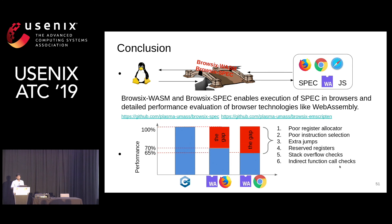Two quick questions. First, did you try any other architecture with a lesser register pressure problem, like ARM64? Did you try any other instruction set other than Intel where register pressure was not such a big issue?